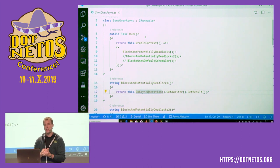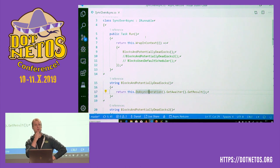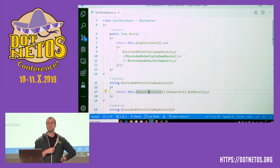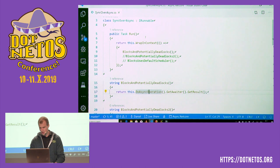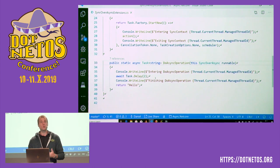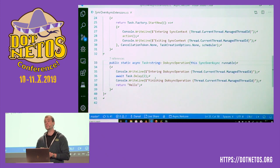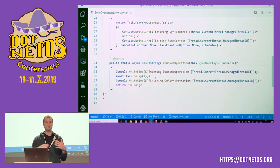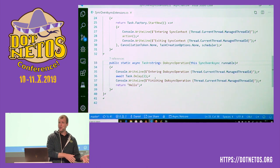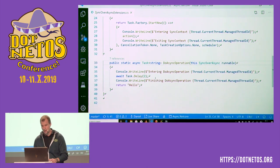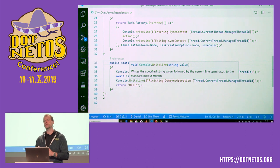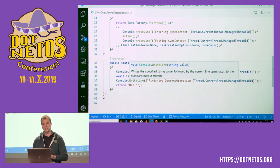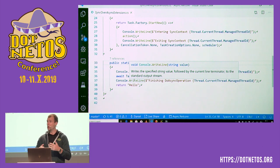We can easily solve this problem — ConfigureAwait(false). We add ConfigureAwait(false) to this method, and then it would no longer block, because we're telling the compiler-generated state machine: we don't want you to do this context capturing, we want to be context-free. Then the continuation — the console writeline, return hello — can be executed on any other thread pool thread. And then this code will no longer deadlock.